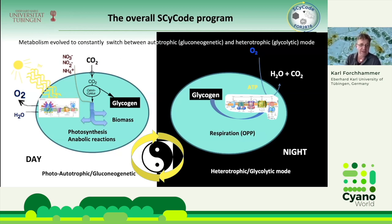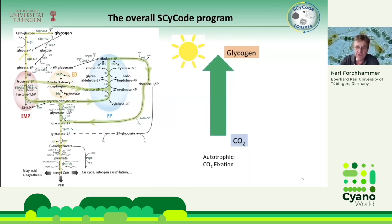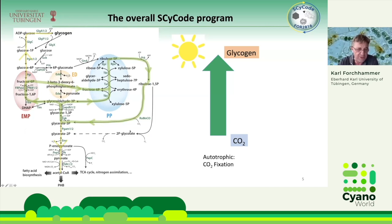In reality, the metabolism evolved to constantly switch between an autotrophic phase, where gluconeogenetic reactions occur, and heterotrophic phases, where under certain conditions the glycolytic routes are used. This occurs, for example, during constant day-night switches. During autotrophic phases in sunlight, when CO2 is fixed, the cells make all cellular biomass and produce glycogen as a storage reserve. But most of the fixed carbon goes in the direction of anabolic reactions.